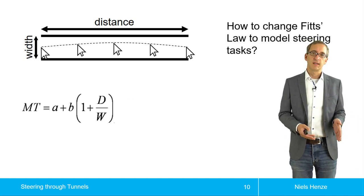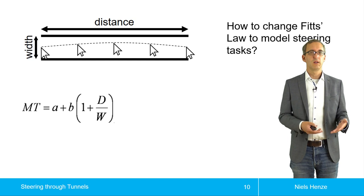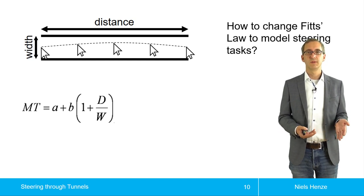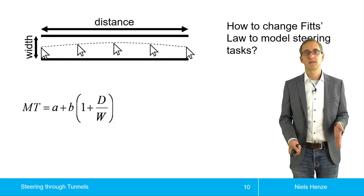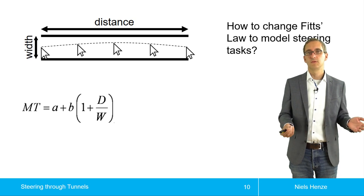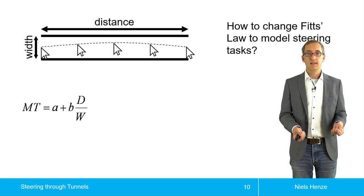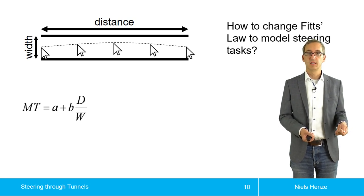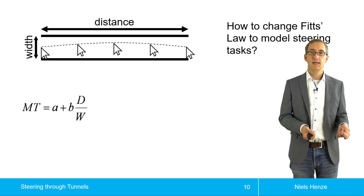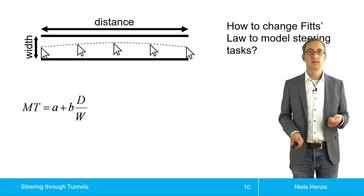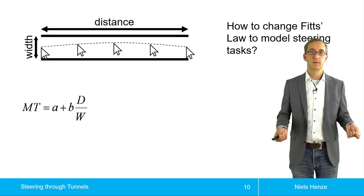And if we've done that, then we might wonder about the one plus. Do we really need the one? No, we can put that into the constant B. So we can also get rid of the one plus. And so what we end up with is the movement time is A plus B multiplied by D divided by W.